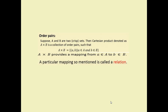Suppose we have A and B, two crisp sets. The Cartesian product is denoted as A cross B — that is, a collection of ordered pairs such that A cross B = {(a, b)} where a belongs to set A and b belongs to set B. For example, if A = {1, 2} and B = {3, 4}, the mappings we get are (1,3), (1,4), (2,3), (2,4). This mapping or relation between elements is represented as the Cartesian product.